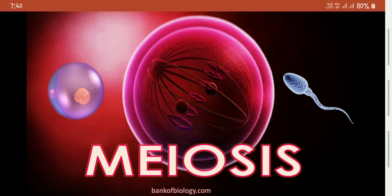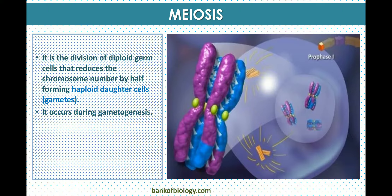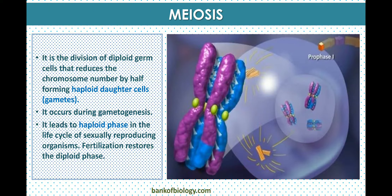Today we are studying about meiosis. Meiosis is a type of cell division which occurs in eukaryotic cells. Diploid germ cells produce daughter cells with half the chromosome number, forming haploid daughter cells. It occurs during gametogenesis — the formation of gametes. It leads to the haploid phase in the life cycle of sexually reproducing organisms, and fertilization restores the diploid phase.